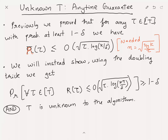Instead, using the doubling trick, what we will be able to get is: simultaneously for every tau in T, the regret up till the first tau time steps R(tau) is at most order sqrt(tau * log(kT/delta)) with probability at least 1 minus delta. Note there's an extra T hiding inside the log term. This is not too bad because usually delta would be something like 1 over a polynomial in T, so up to constants these two bounds are essentially the same. Critically, this bound holds for every tau simultaneously, and T is unknown to the algorithm.